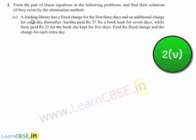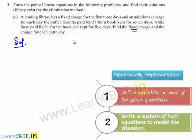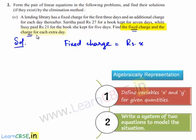Moving on to the fifth problem: A lending library has a fixed charge for the first 3 days and an additional charge for each day thereafter. Sarita paid Rs. 27 for a book kept for 7 days, while Susi paid Rs. 21 for a book she kept for 5 days. Find the fixed charge and the charge for each extra day. Let us assume the fixed charge to be x rupees and the charge for each extra day to be y rupees.